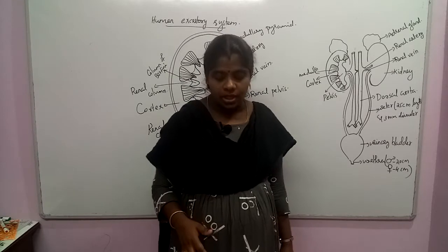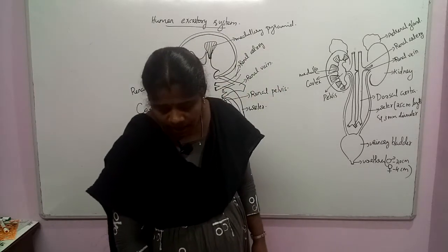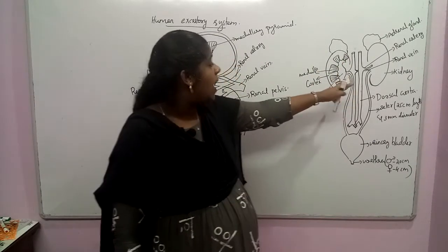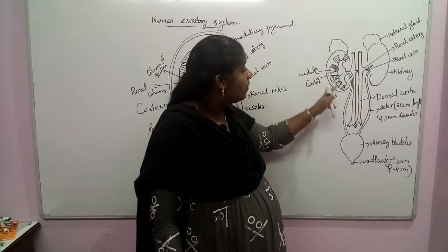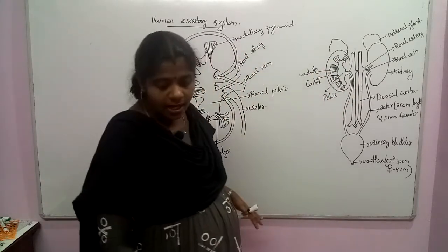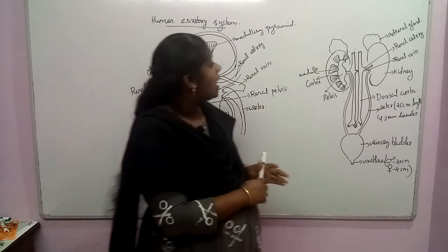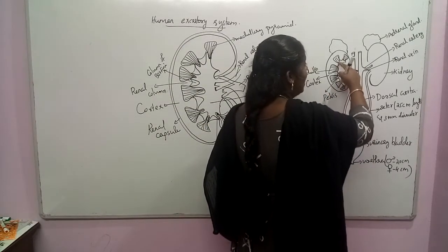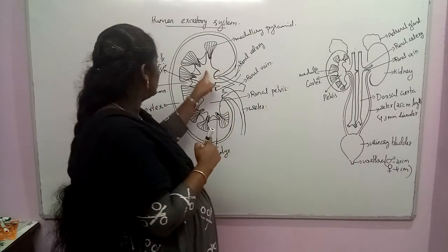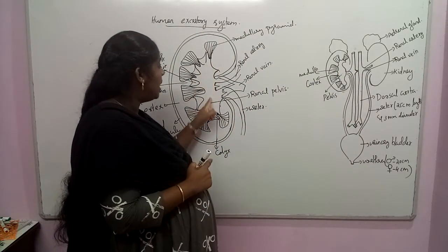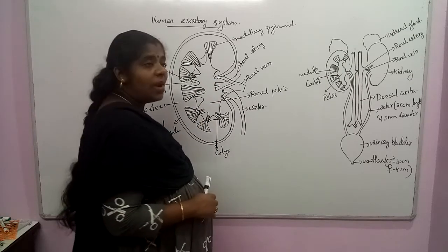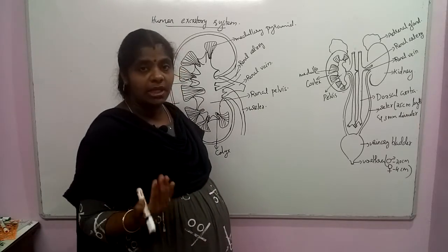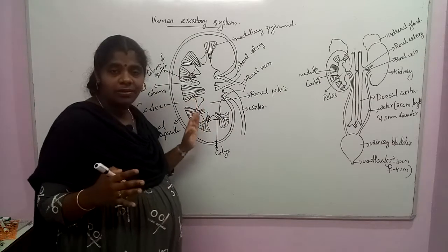The kidney is a bean shaped structure. It has an outer cortex region and is covered by a capsule-like structure. It has a cortex and a medulla region, and there is a broad funnel-like structure present in the kidney called the renal pelvis.